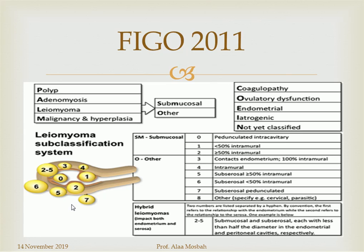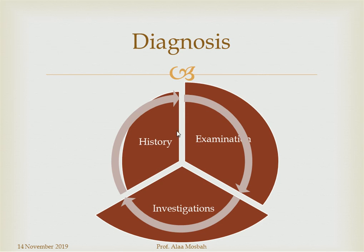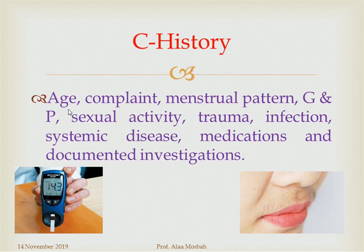How do we diagnose abnormal uterine bleeding? We depend on history, examination, and investigation. In history, we ask about the patient's age, since certain causes are more common at certain age groups. We analyze the complaint: what increases or decreases it, precipitating factors, menstrual pattern, gravidity and parity, sexual activity, history of trauma, infection, systemic disease, medications, any documented investigations, and any similar previous conditions.